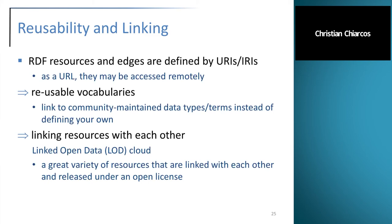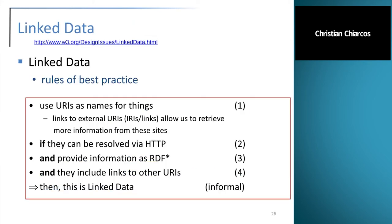These kinds of links constitute the linked open data cloud, which comprises a great variety of resources linked with each other and released under open licenses. Linked data on this basis is defined as a set of rules of best practice. Informally: first, use URIs or IRIs as names for things so they can be resolved with standard protocols; if those URIs can be resolved via HTTP, they should provide information as RDF or related standards, and they should include links to other URIs.